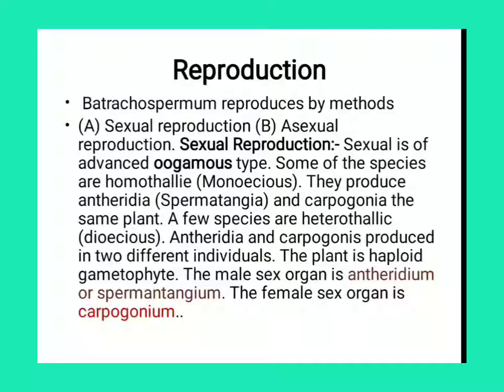Hello, good noon to all of you. Today we are discussing about reproduction of Batrachospermum. In Batrachospermum, there is oogamous type of reproduction. In oogamous type of reproduction, the male reproductive organs are small in size compared to the female reproductive organs, and the female reproductive organs are non-motile while the male reproductive organs are motile. This type of sexual reproduction is known as oogamous type of reproduction.